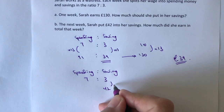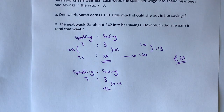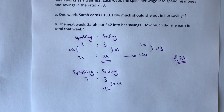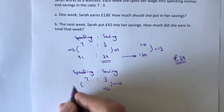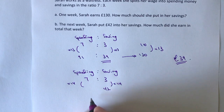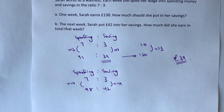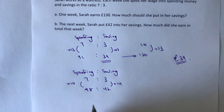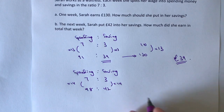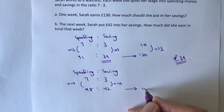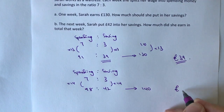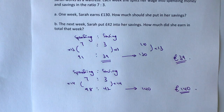In other words she put fourteen times more into her savings than she would have done had she earned ten pounds. So we've got to multiply the other side by fourteen as well, and that gives us ninety-eight. So how much did she earn in total that particular week? That's going to be ninety-eight plus forty-two, which is a hundred and forty. So in that particular week she earns a hundred and forty pounds.